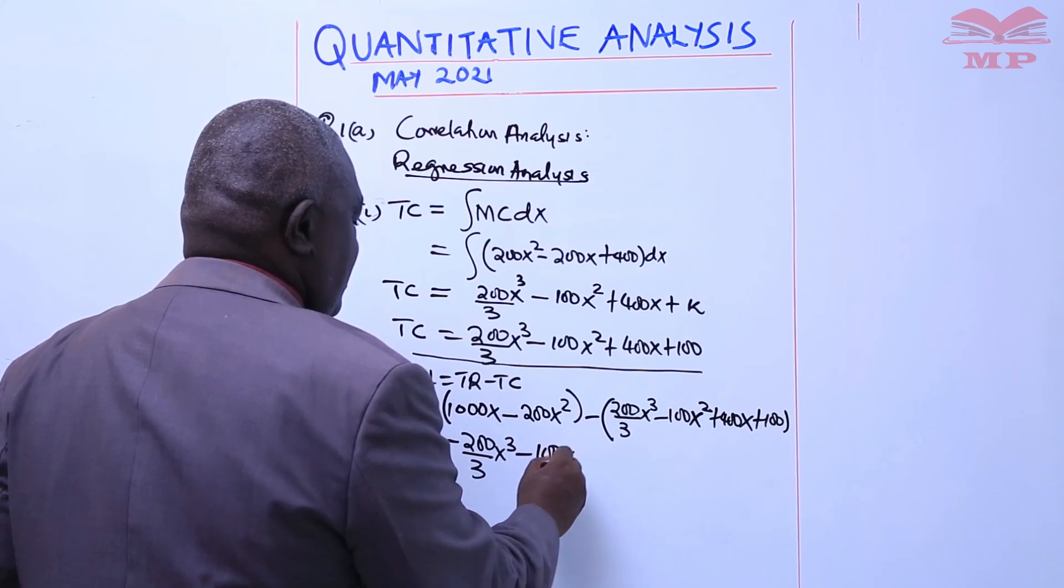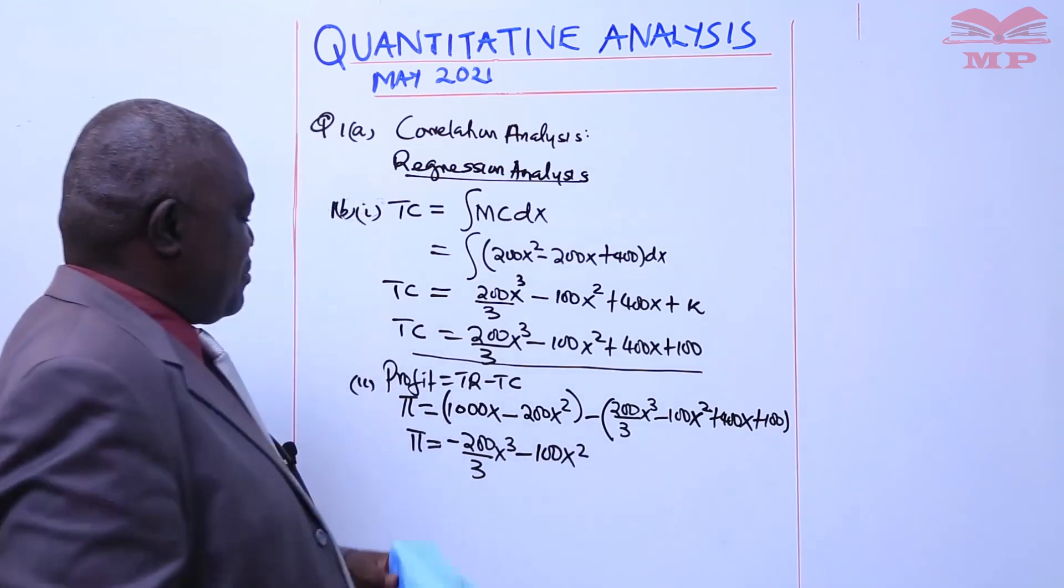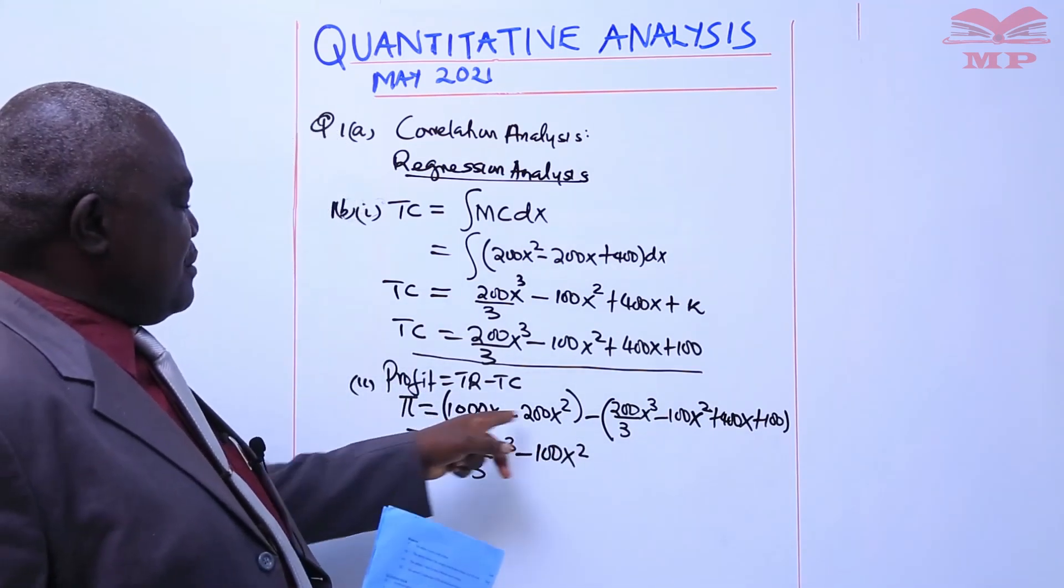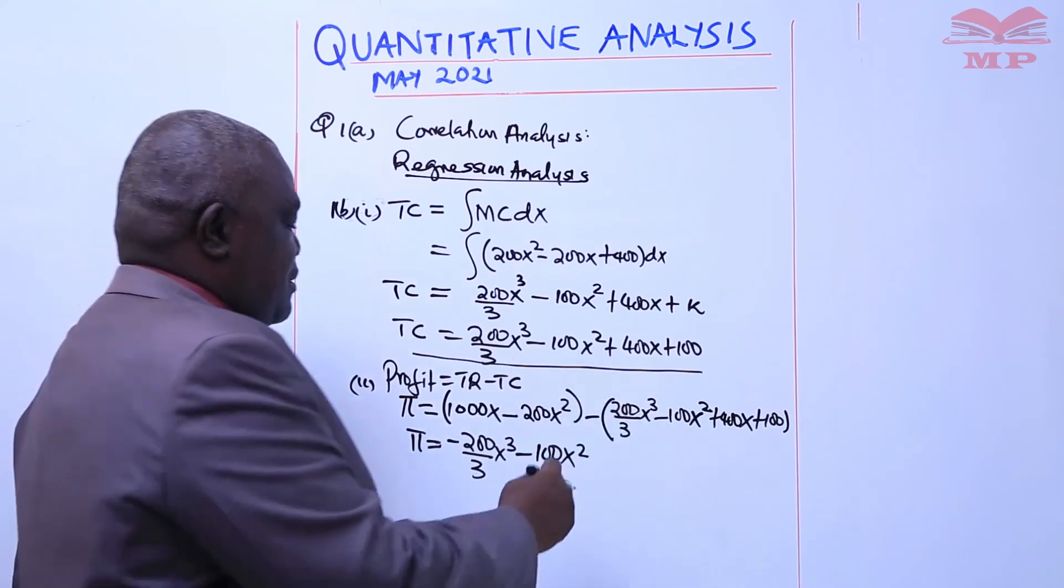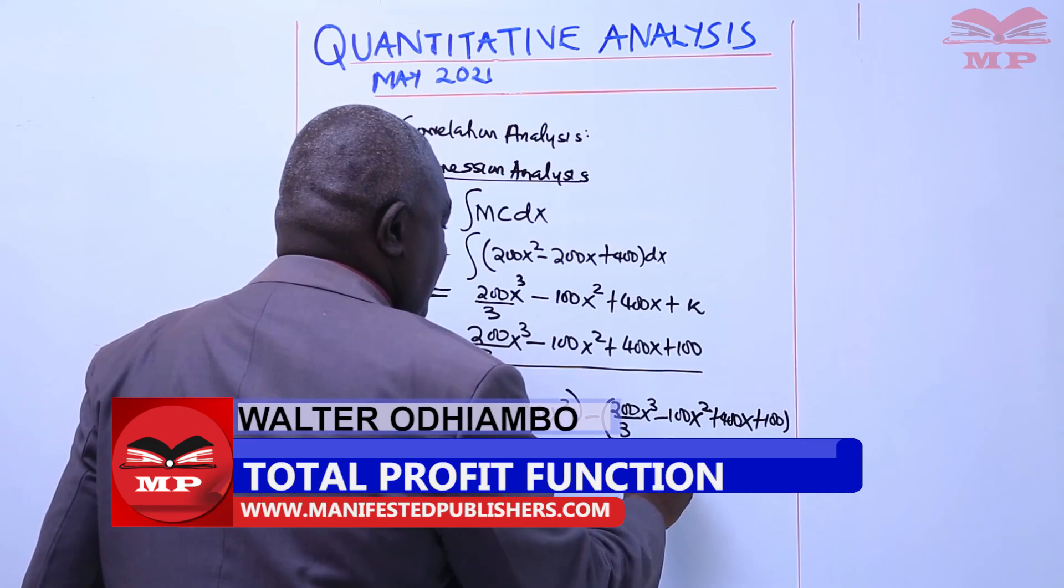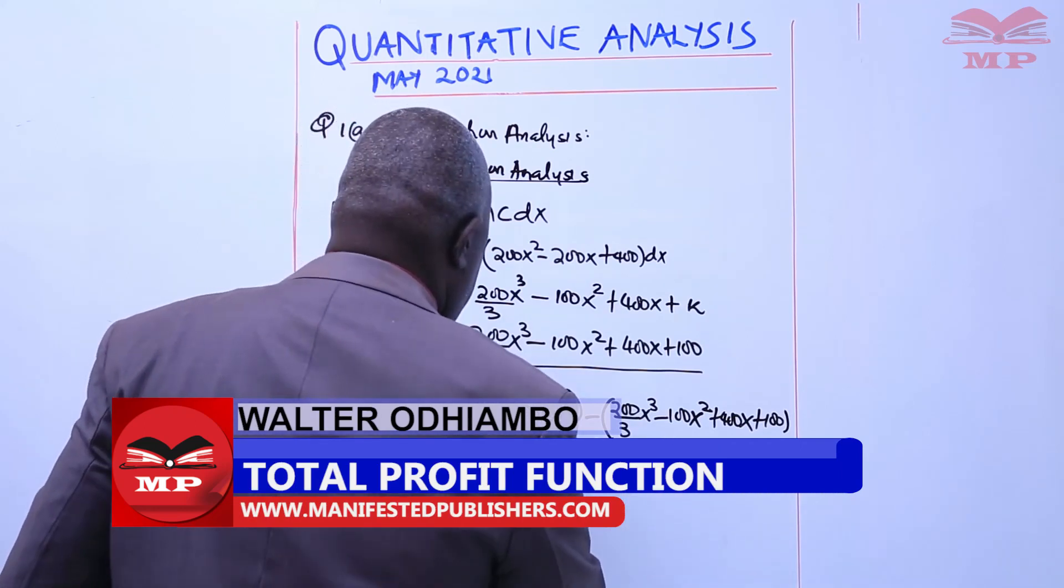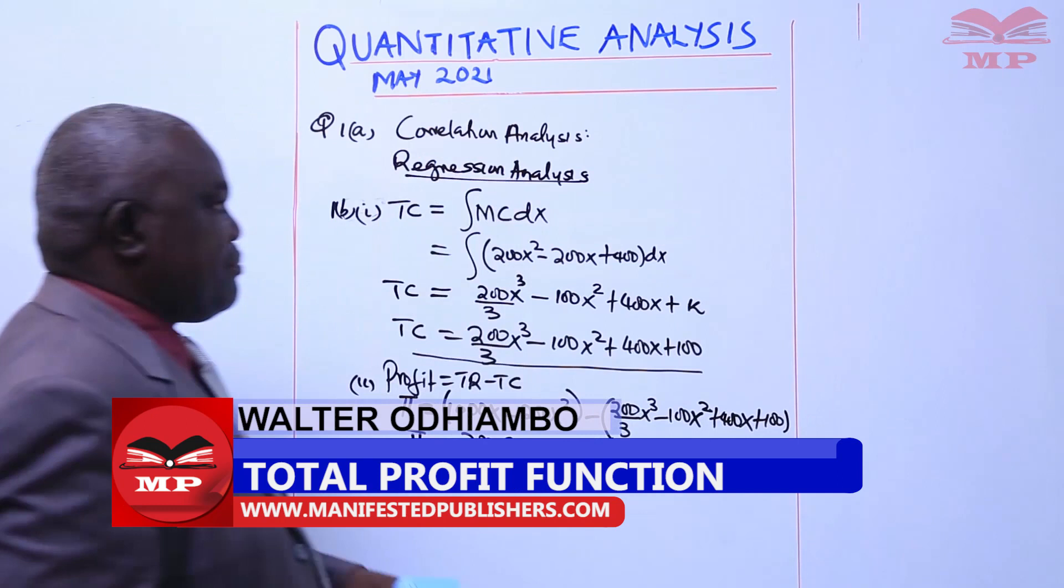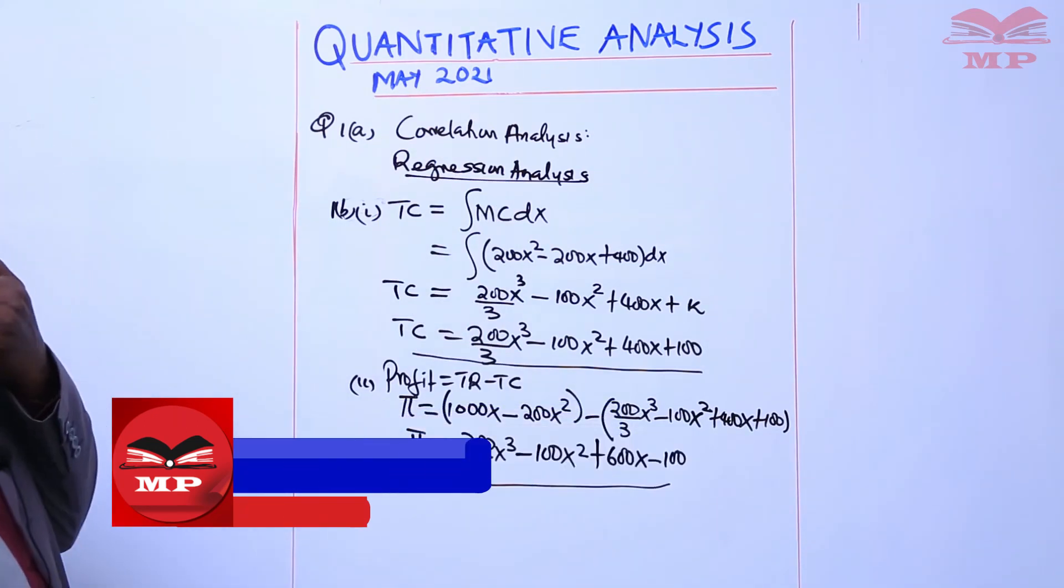For X terms: 1000 - 400 becomes +600X, then -100 for the constant. This is the profit function, and you are done.